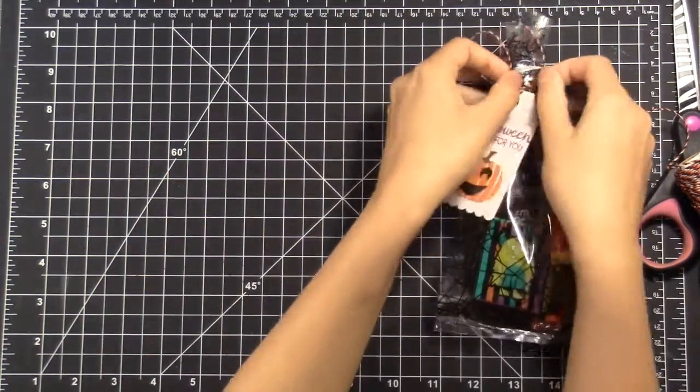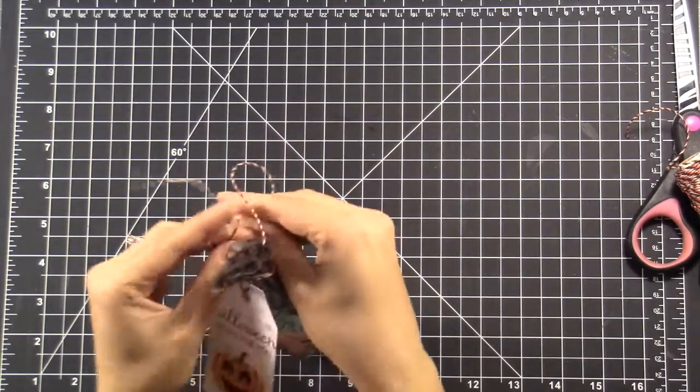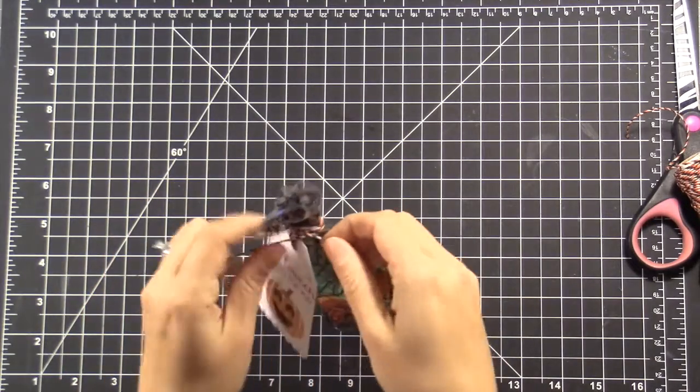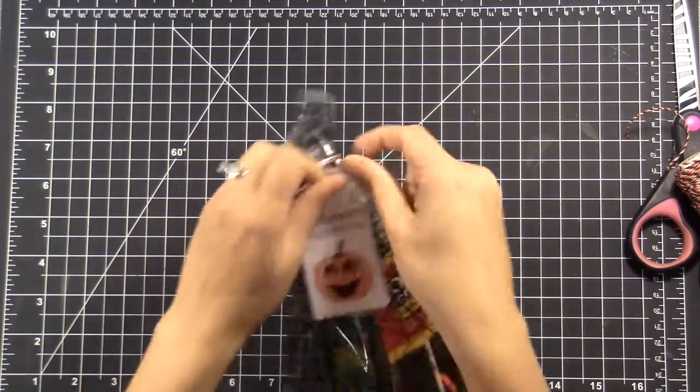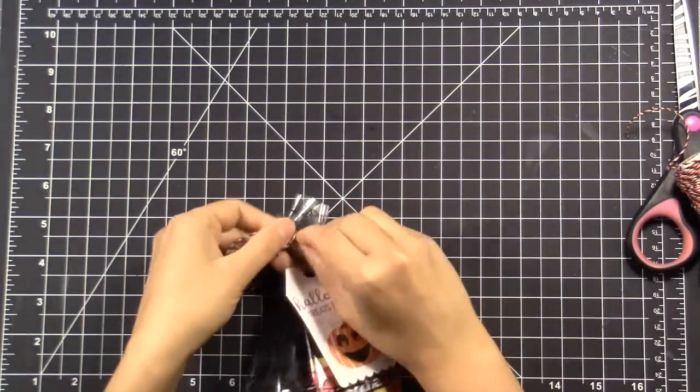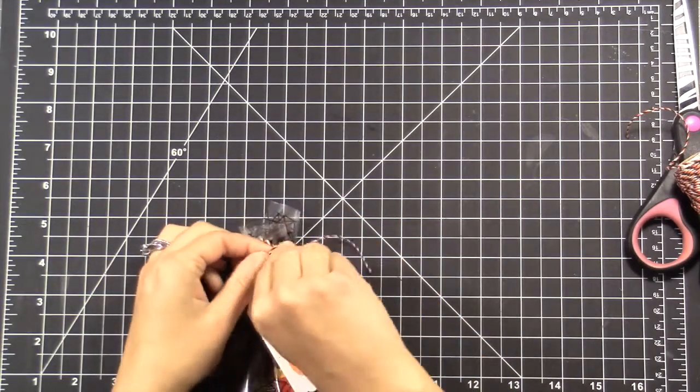So once I did that, I'm using the Lawn Fawn Spooky Twine to attach this onto my gift bag. I'm just wrapping it around once and then bringing it to the front and just tying a bow. And it took me a little while to finick with it, but I managed to get it down packed after a few moments of messing around with it.